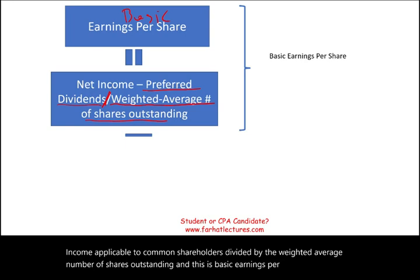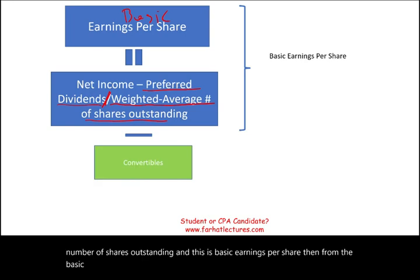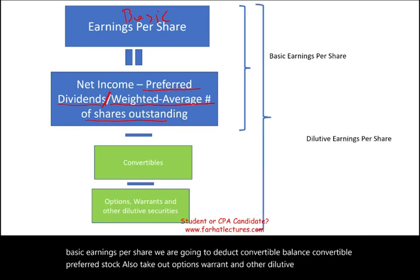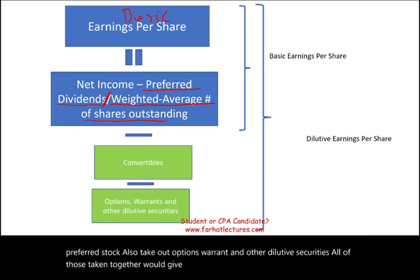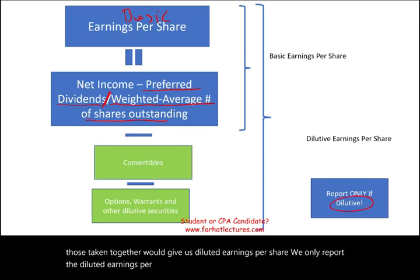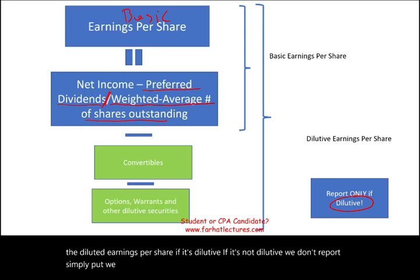From basic earnings per share, we then account for convertible bonds, convertible preferred stock, options, warrants, and other dilutive securities. All of those taken together will give us diluted earnings per share. We only report diluted earnings per share if it is actually dilutive. If it's not dilutive, we don't report it — we perform the computation and then discard it because it's non-dilutive.